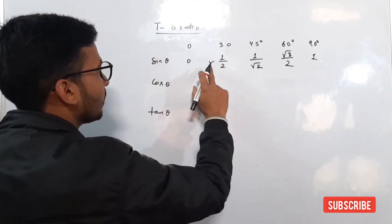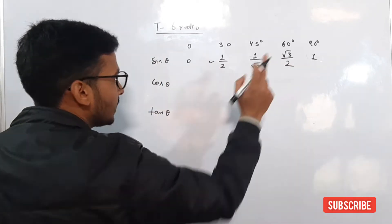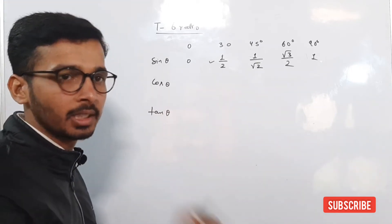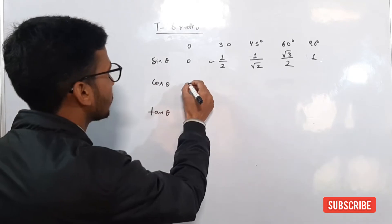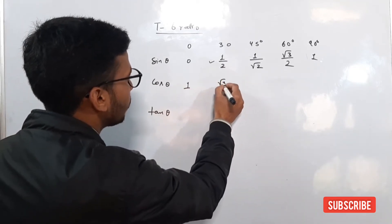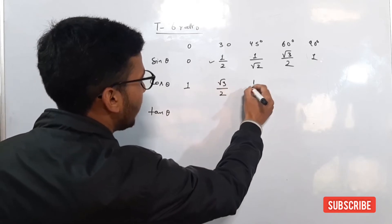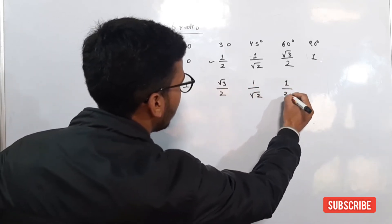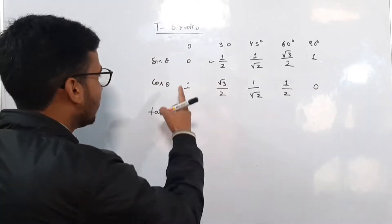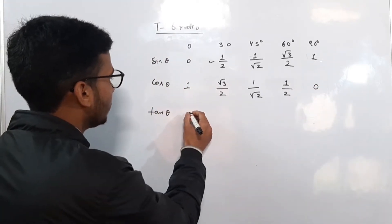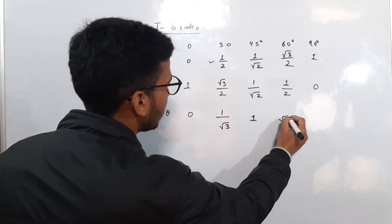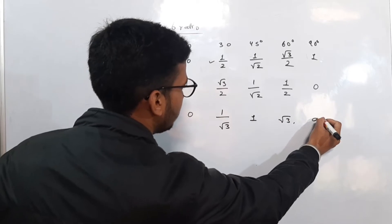The most important angles are 30°, 45°, and 60°. For cosine: cos 0° = 1, cos 30° = √3/2, cos 45° = 1/√2, cos 60° = 1/2, and cos 90° = 0. For tan: tan 0° = 0, tan 30° = 1/√3, tan 45° = 1, tan 60° = √3, and tan 90° is not defined.